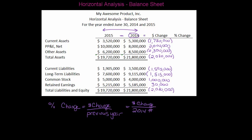Let's go through and calculate some of these. I'm going to take one million seven hundred eighty thousand divided by five point three million because that's my older year — that gives me a percent change of negative thirty three point five eight percent. For property plant and equipment: two million divided by eight million, because that's my older year — that was an increase of twenty five percent. Other assets: two point three million divided by the 2014 number of eight point five million — that's a negative twenty seven point oh six percent.